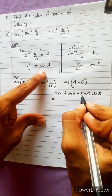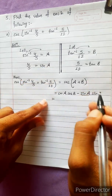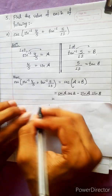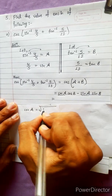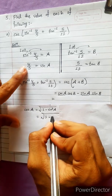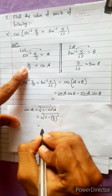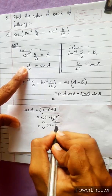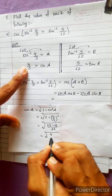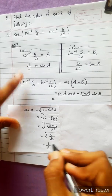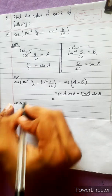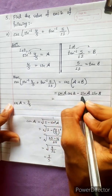We have the value of sin A. We can also get cos A using the formula: cos A = √(1 - sin²A). So cos A = √(1 - (4/5)²) = √((25 - 16)/25) = √(9/25) = 3/5. So cos A = 3/5.